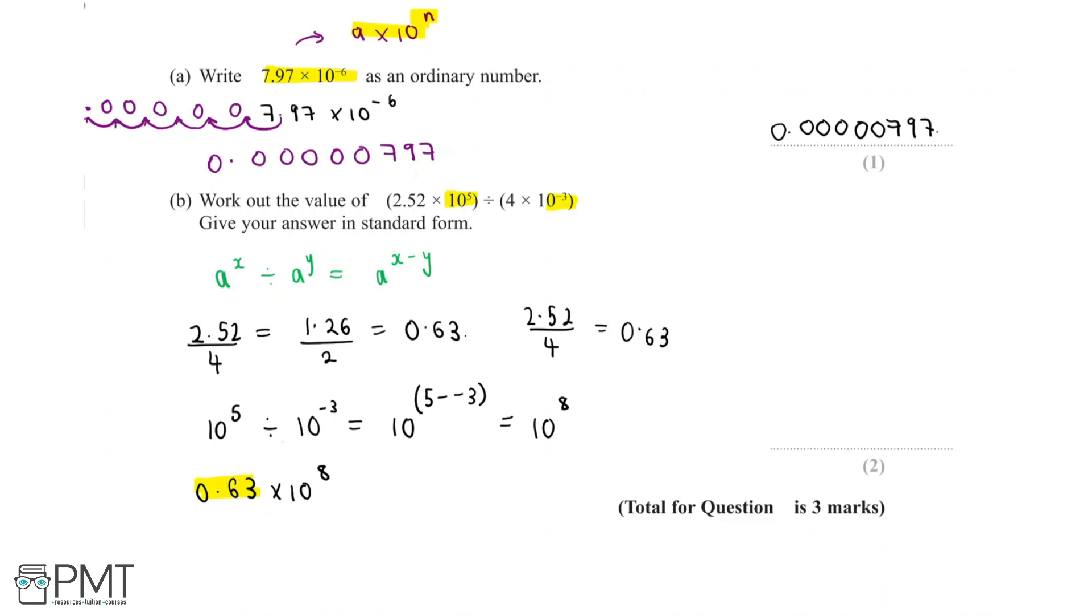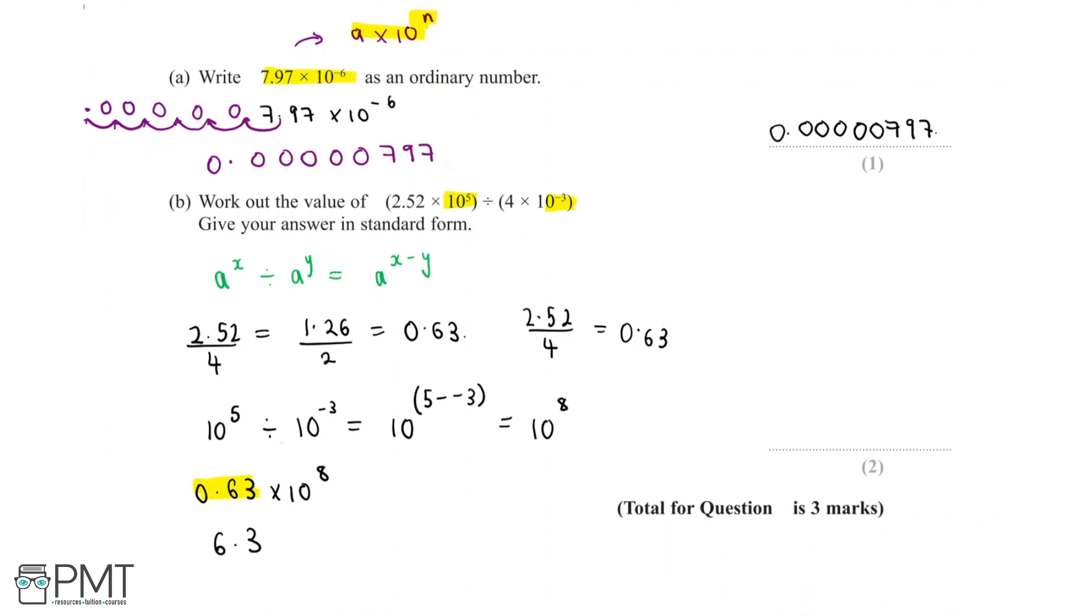We can do this by multiplying 0.63 times 10 to get 6.3. But since we've changed the base value, we have to also change the power. Since we've multiplied 0.63 by 10, we divide the power by 10, because we need to take away the zero we just added. We're left with 6.3 × 10^7 as our final answer.